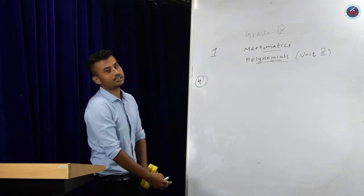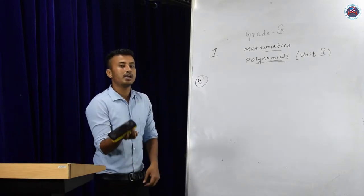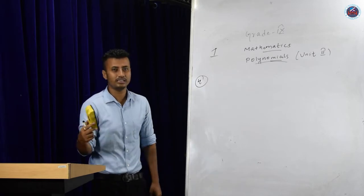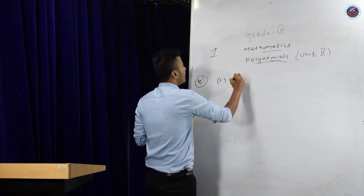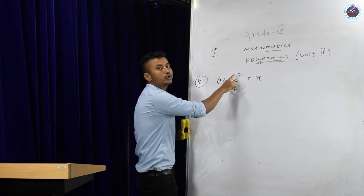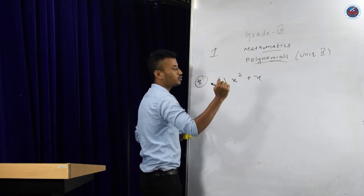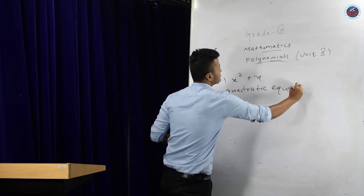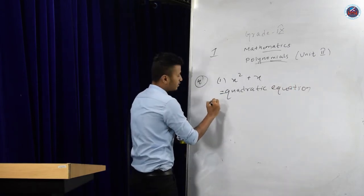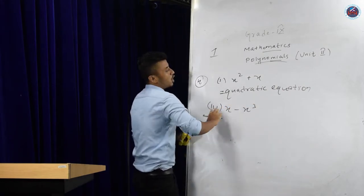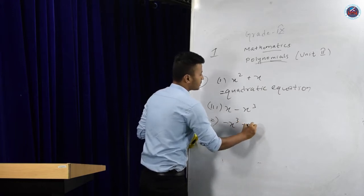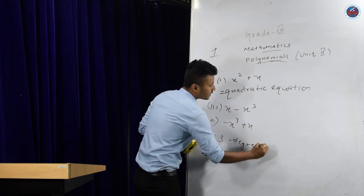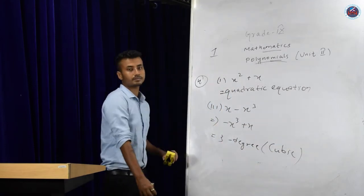The last question says to classify the equations by their degree — either linear, quadratic, or cubic — by identifying the highest power. Question 1: x² plus x — highest power is 2, so degree is 2, which means it is a quadratic equation. Question 3: x minus x³ — always write in descending order: minus x³ plus x — highest power is 3, degree is 3, so it is a cubic polynomial.